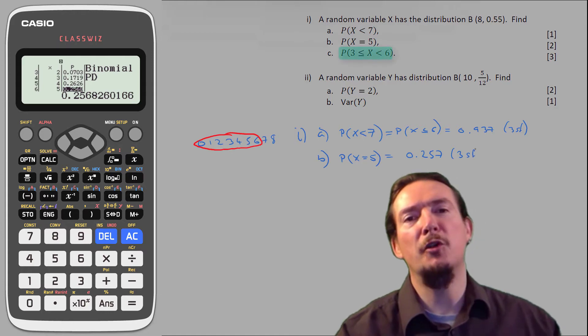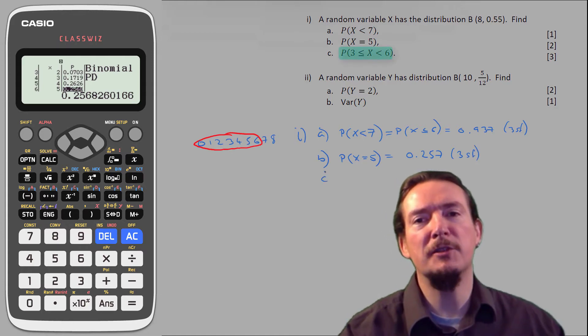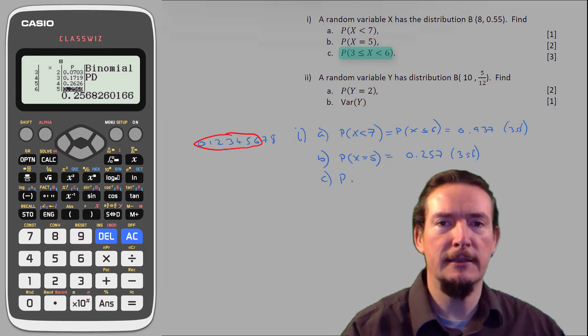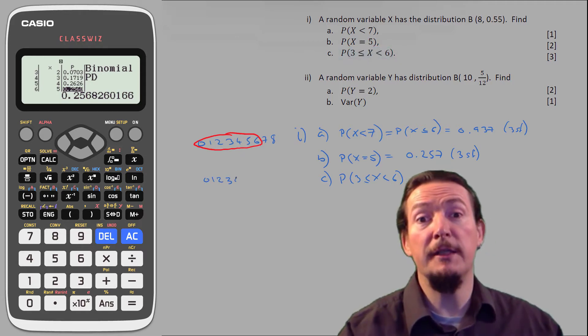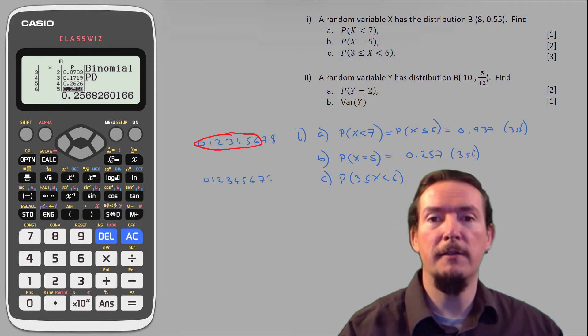Part c is a little bit more complicated, and again, I think it helps to visualise this by listing the possible values of x, and then ringing the ones we want. So here, x is less than 6 and greater than or equal to 3, so x can be 3, or 4, or 5.